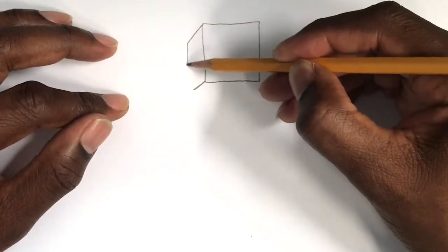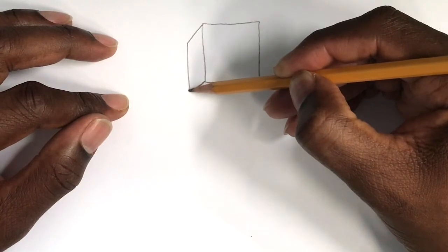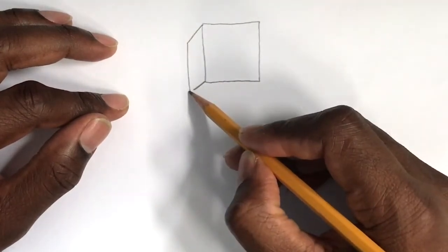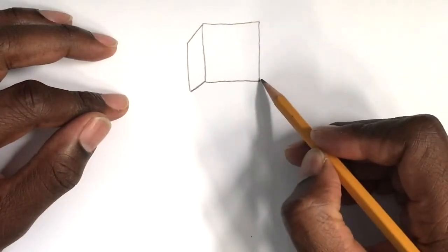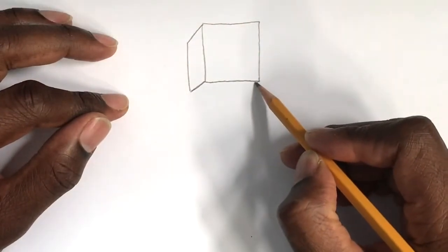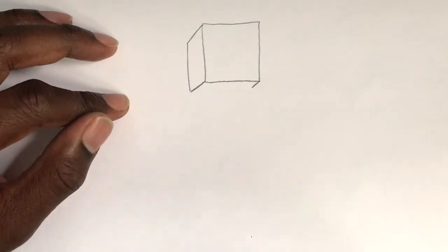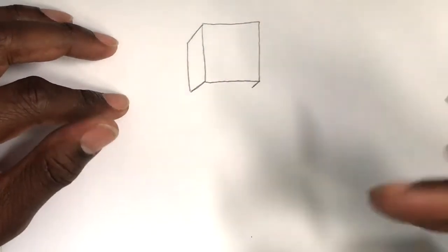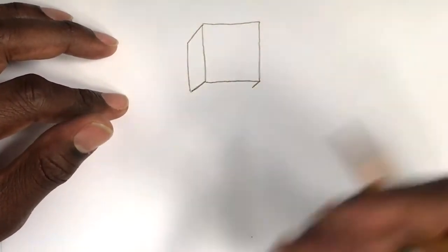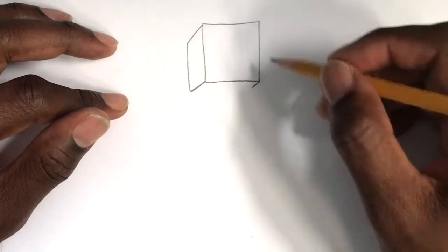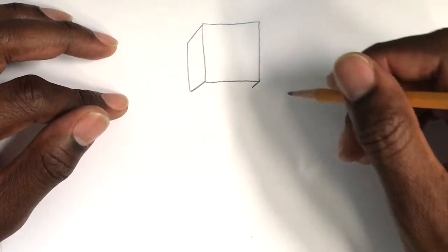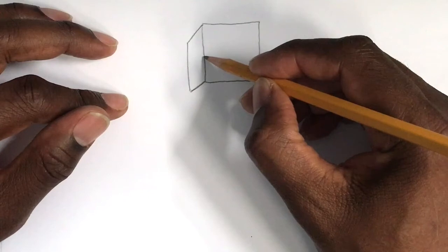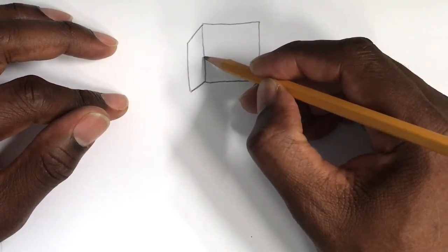Then we'll connect it with a vertical line, and right here we will add a short diagonal line. If I'm going too fast, you can always pause the video, catch up, and push play again. Remember: lines make shapes, shapes make objects, and objects make pictures. Drawing is just like putting a puzzle together — we do it one piece at a time.